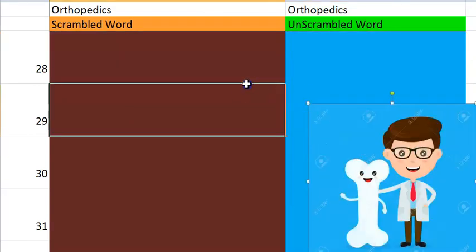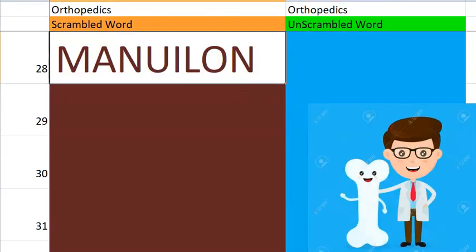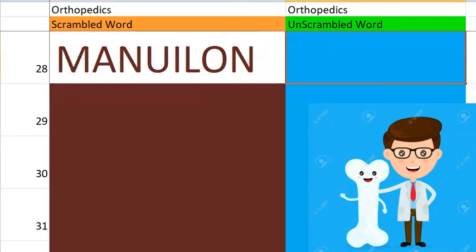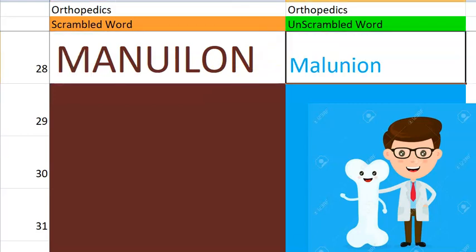Now let us go to the 28th one. Very easy, starts with M. So after a fracture, if it is not treated properly, what can happen? Malunion. Very good.